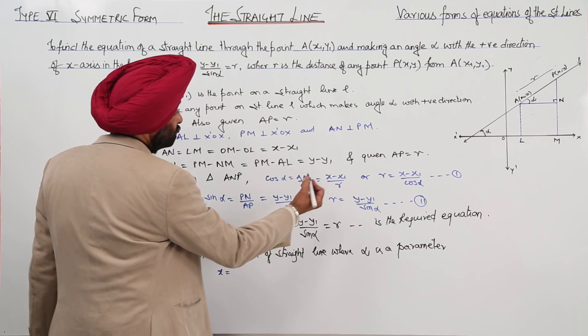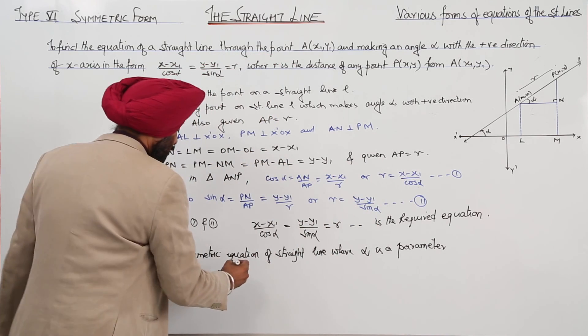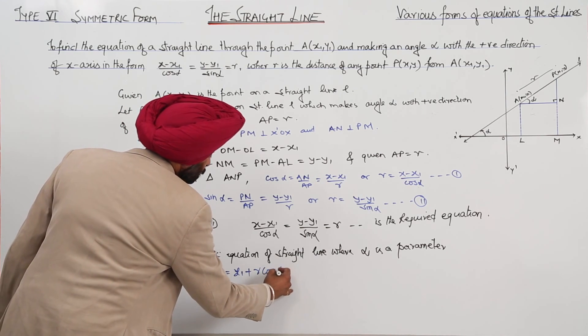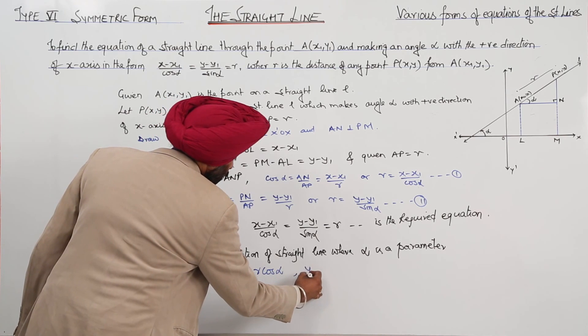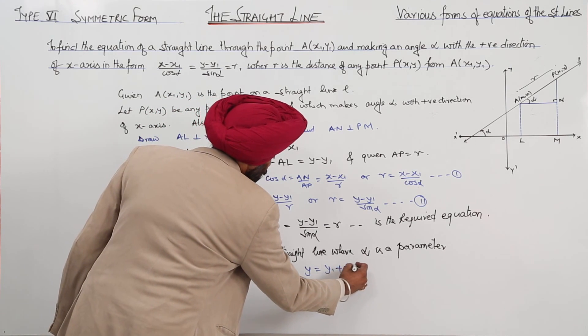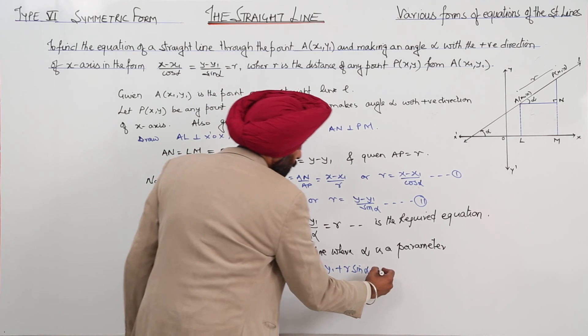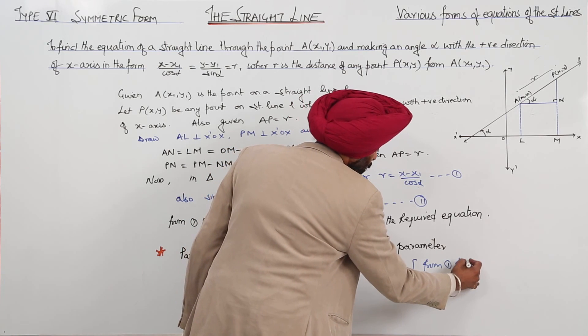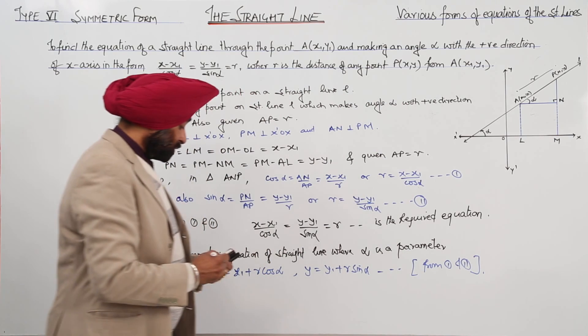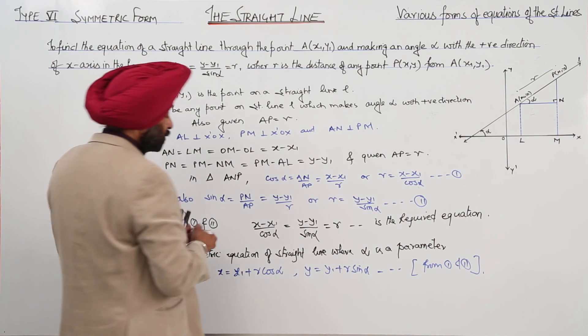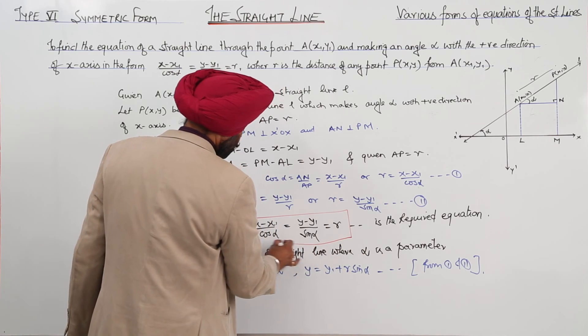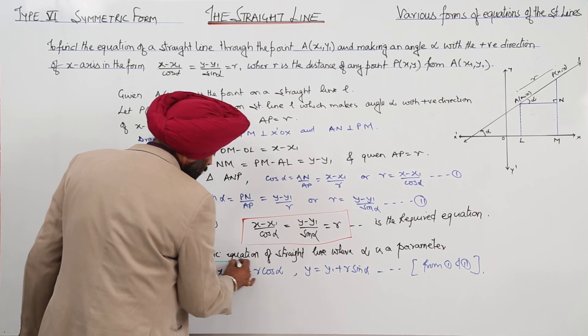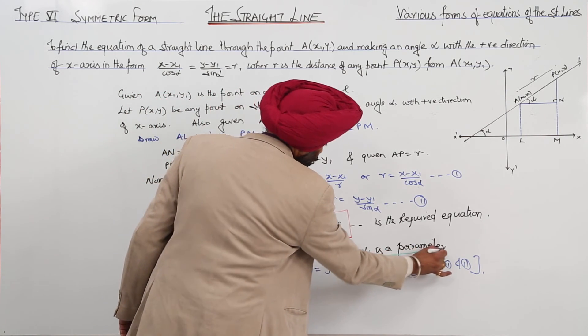From equation 1, x is equal to x1 plus r cos alpha, and y is equal to y1 plus r sin alpha.